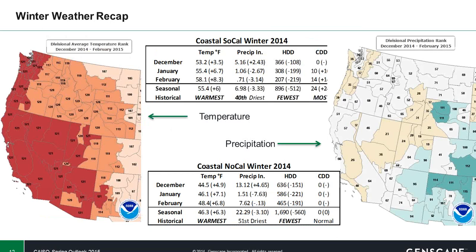Next, we'll move ahead to the rankings for both temperature and precipitation throughout the west for this most recent winter. There are some strong anomalies in warm colors in the plot on the left showing divisional breakdowns of average temperature rank, and any number with a 121 signifies the warmest December 2014 through February 2015 period on record. That encompasses the entirety of California and Nevada, with much of the region seeing either the warmest or the second warmest winter stretch on record.